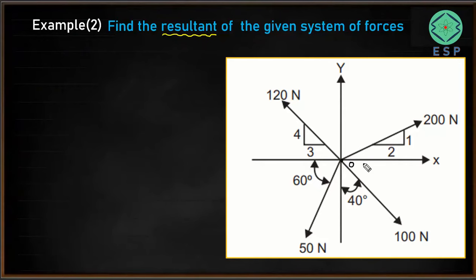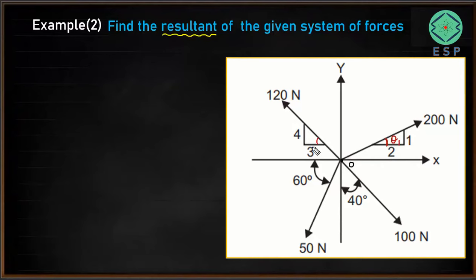To find the resultant of this system of forces, we have to resolve each force along the x and y directions. But we don't know the angle made by the 200 N force with the x-axis, and similarly we don't know the angle made by the 120 N force with the x or y axis. So first we need to calculate these angles — let's call them theta 1 and theta 2.